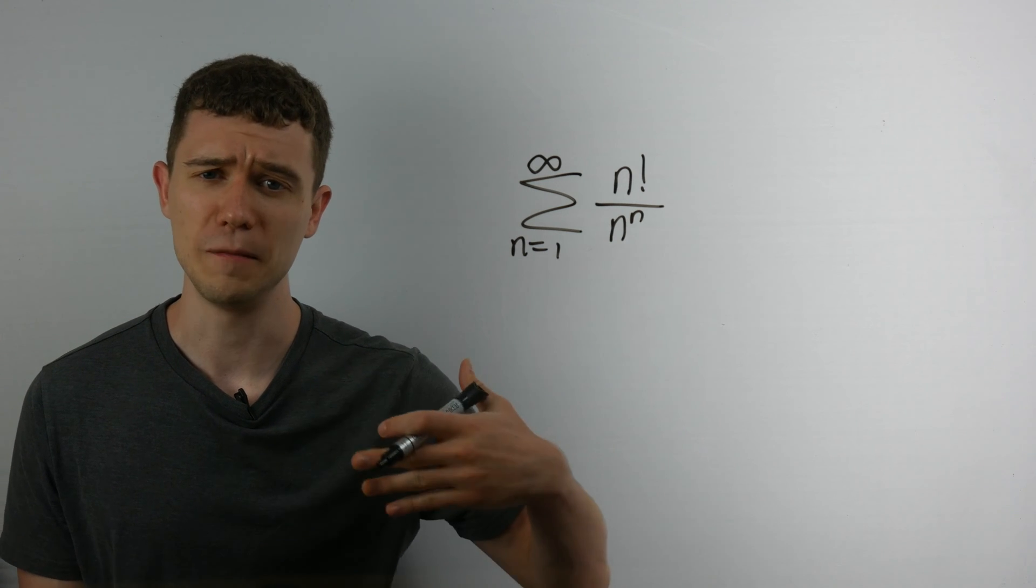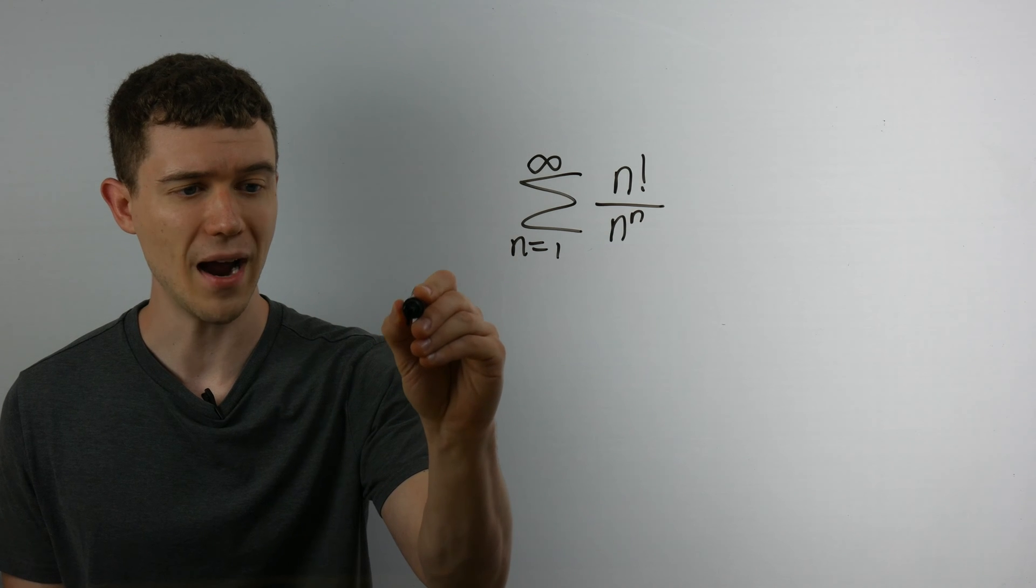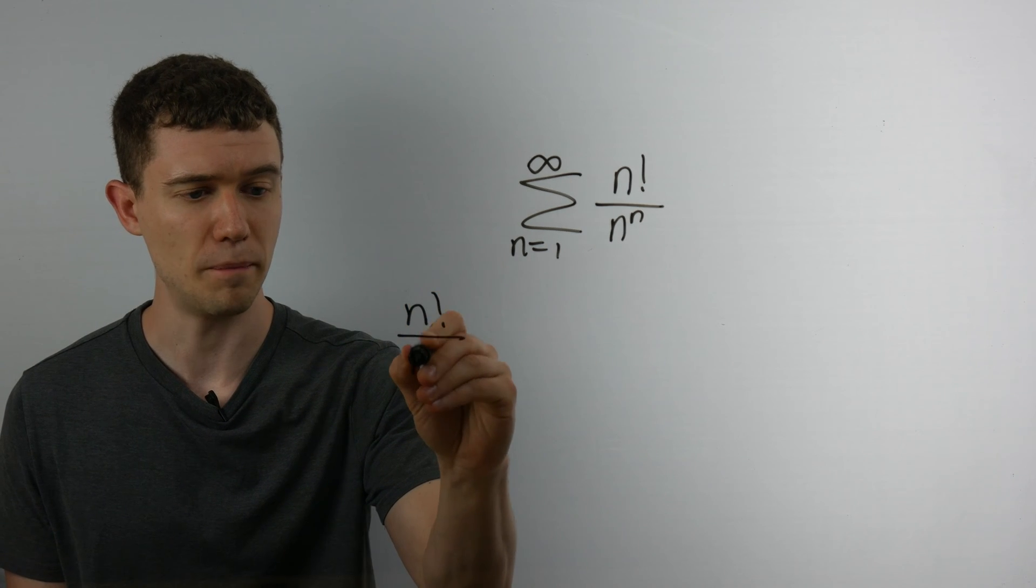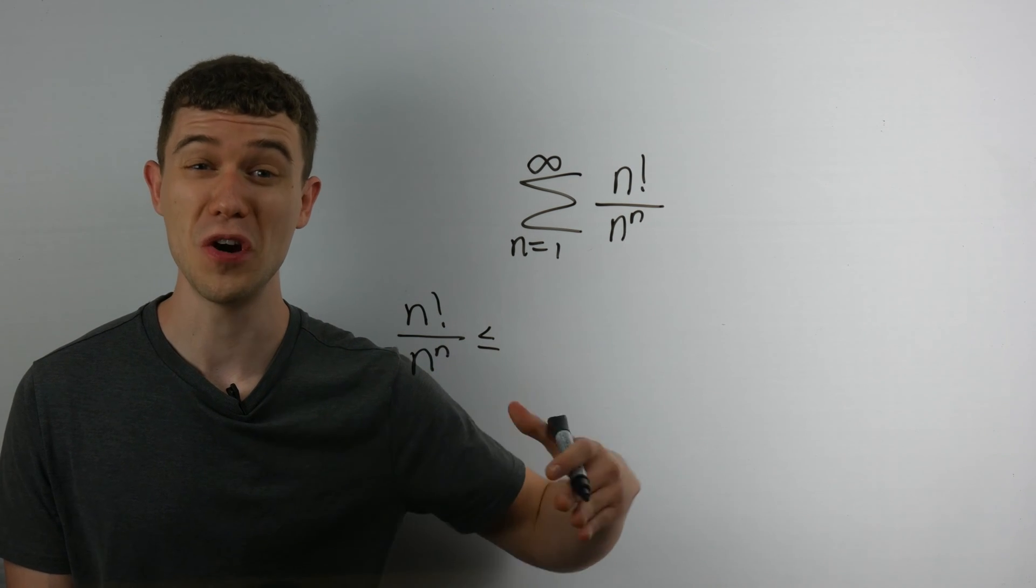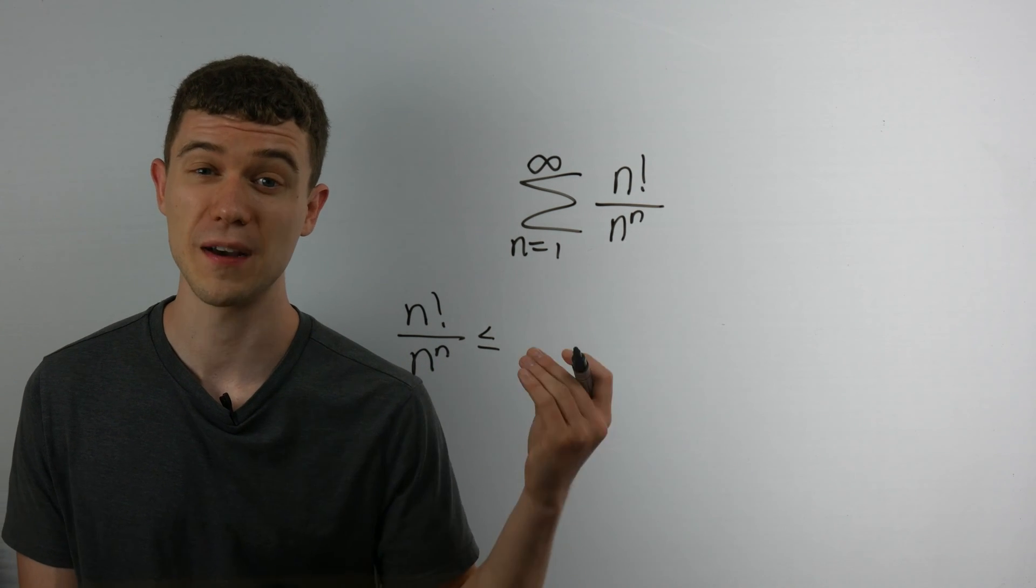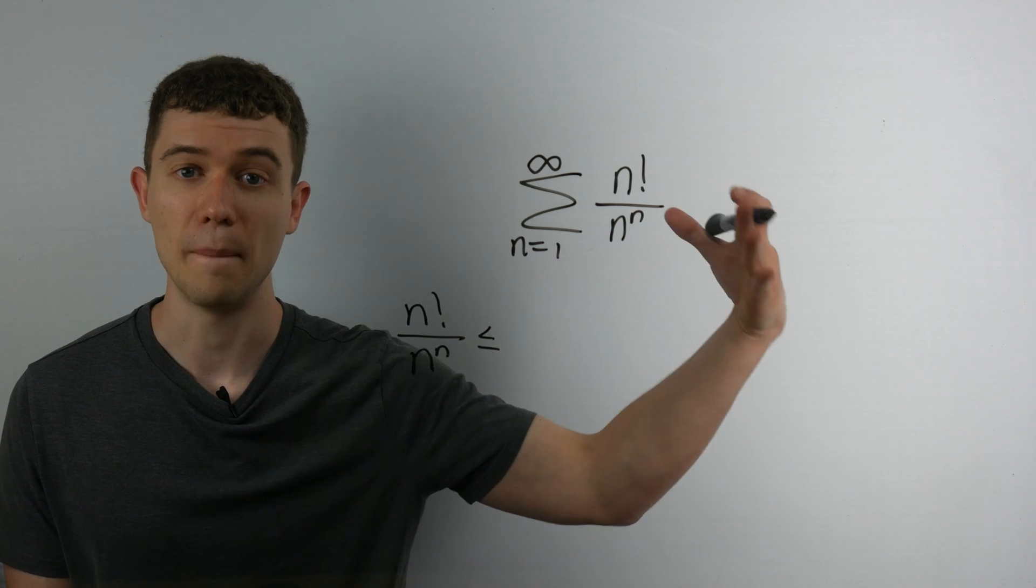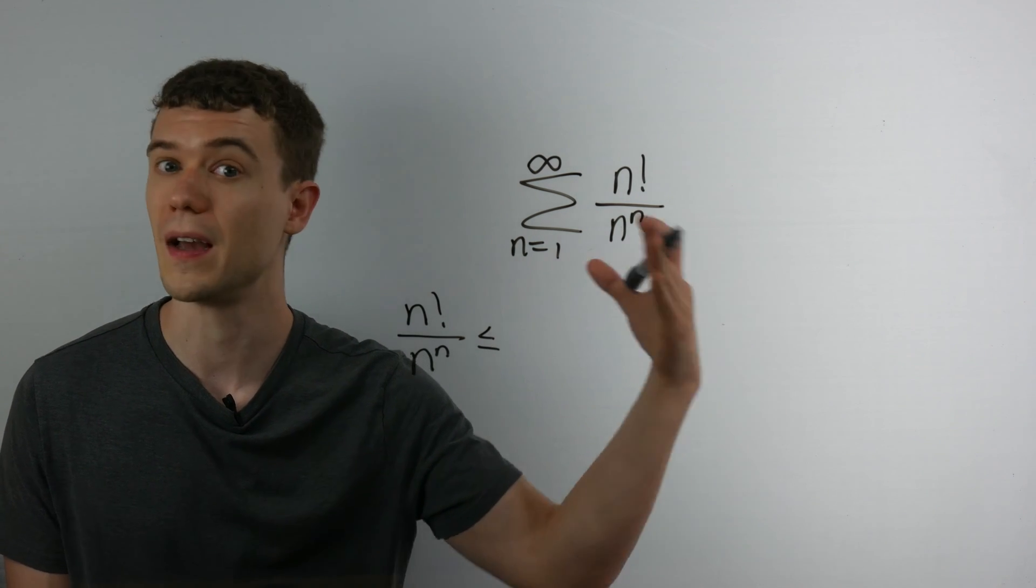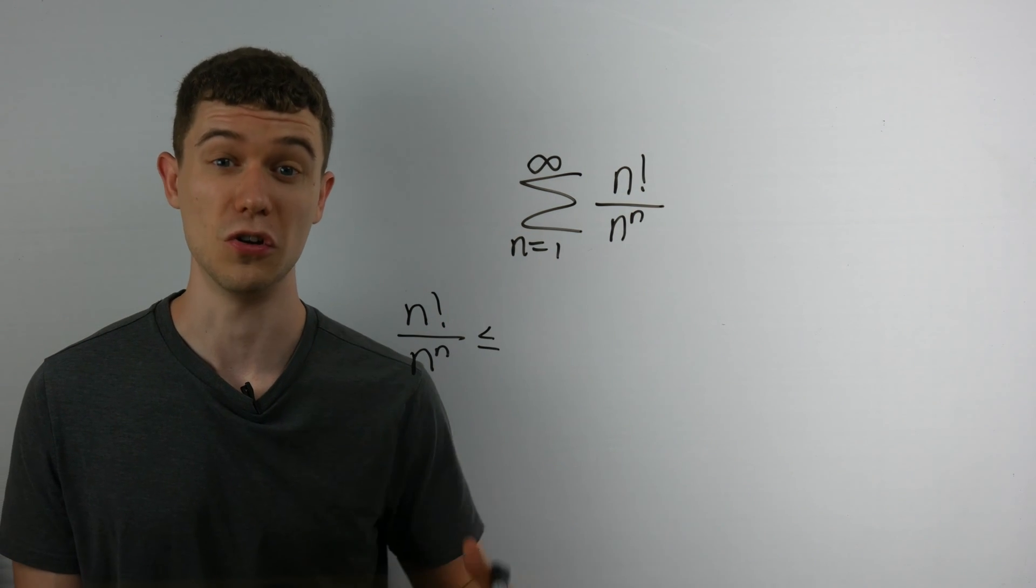And if my intuition is telling me that this series is going to converge, then I want to bound this sequence above by something that I do know converges. Because the direct comparison test says if I'm bounded above by a convergent series, something I know converges, then the series in question must also converge.